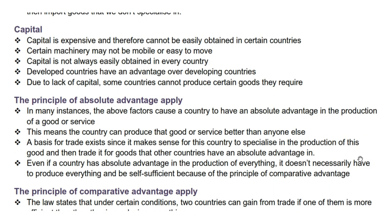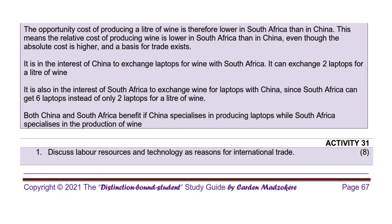The last reason for international trade is capital. Capital is expensive and therefore cannot be easily obtained in certain countries. Certain machinery may not be mobile or easy to move. Capital is not always easily obtained in every country. Developed countries have an advantage over developing countries. Due to lack of capital, some countries cannot produce certain goods they require.